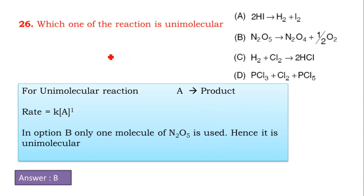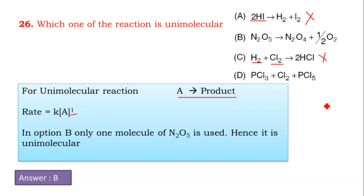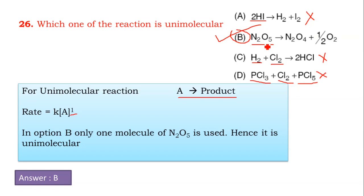Next question 26: Which one of the following reactions is a unimolecular reaction? For a unimolecular reaction: A → product, rate = k[A]¹. Option A has 2 HI molecules — bimolecular, ruled out. Option C has H₂ and Cl₂, two molecules — bimolecular, ruled out. Option D has PCl₃ and Cl₂ combining to give PCl₅ — also bimolecular, ruled out. Option B: N₂O₅ → N₂O₄ + O₂ involves a single molecule, so it is a unimolecular reaction. Option B is correct.